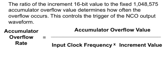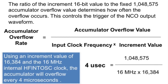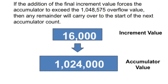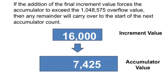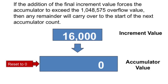The accumulator overflow rate is calculated by a simple formula. Using an increment value of 16,384 and the 16 MHz high frequency internal oscillator clock, the accumulator will overflow every 4 microseconds. If the addition of the final increment value forces the accumulator to exceed 1,048,575, any remainder will carry over to the start of the next accumulator count. For this reason, the accumulator can be overwritten in software to clear it — for example, during the interrupt service routine.